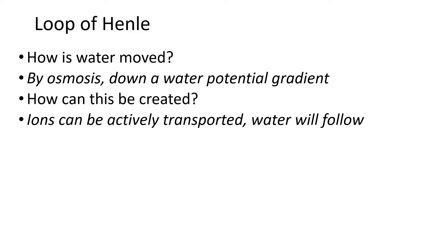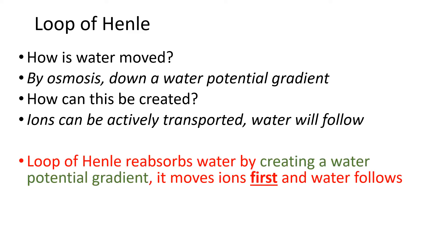Water moves from where there is more water - a dilute solution has more water and it will move from where there is more water to where there is less water. A concentrated solution has less water. The loop of Henle reabsorbs water by creating a water potential gradient, so we have to talk about the movement of ions first. You cannot move water until you've moved ions - if you can remember that one bit of information, the rest of the Loop of Henle will make more sense.